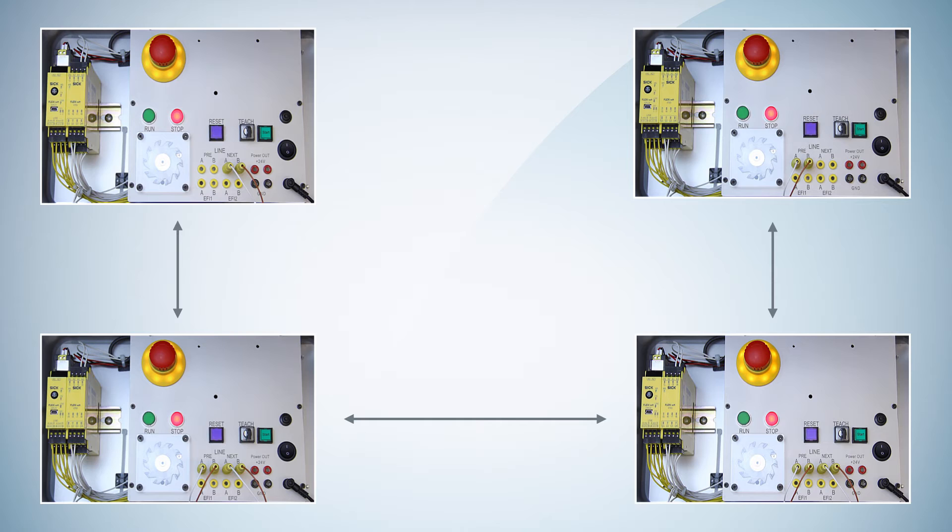The arrangement of the stations in the Flexi-Line system must be confirmed during commissioning via a TEACH process. Once you change something within the topology, the Flexi-Line communication will stop. Then you only have to confirm the new arrangement before the communication can start again.